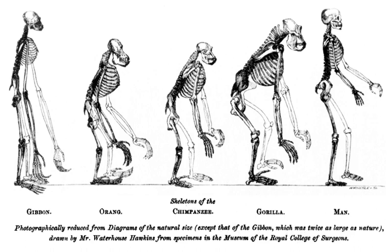Later, in Chapter 6, Darwin produces his famous passage on the birthplace and antiquity of man, quoting the chimpanzee and gorilla as evidence that: "As these two species are now man's nearest allies, it is somewhat more probable that our early progenitors lived on the African continent than elsewhere."